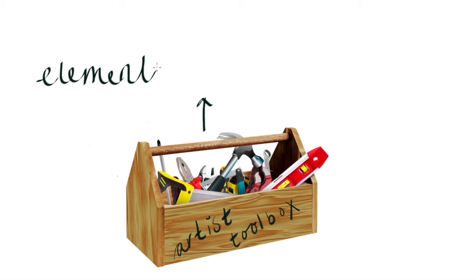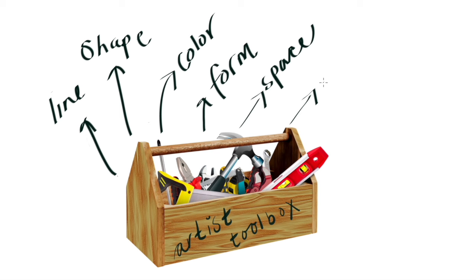Every artist has a toolbox. Inside this toolbox are the seven elements of art. They're line, shape, color, form, space, texture, and value. There's seven total.